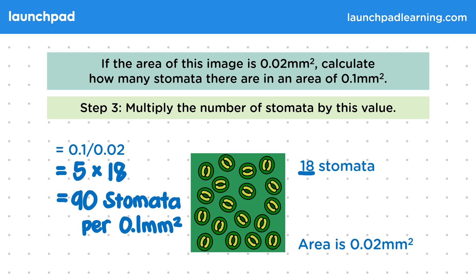You need to be able to describe that the distribution of stomata can be investigated by counting the number of visible stomata in a known area and then multiplying this by the area of interest divided by the known area.